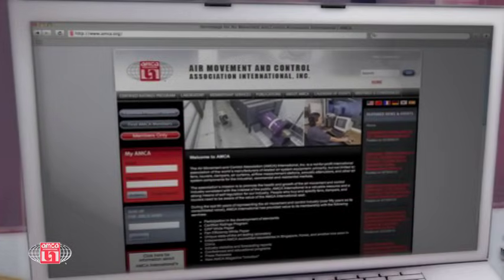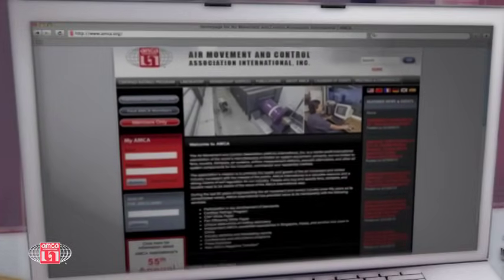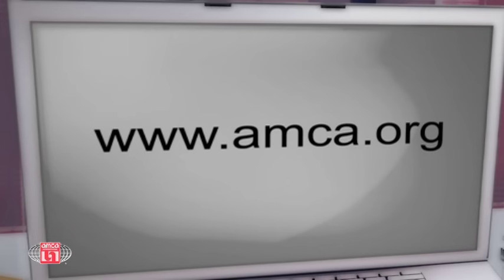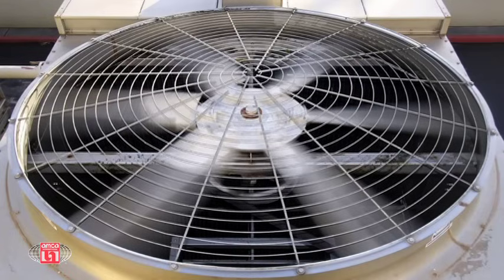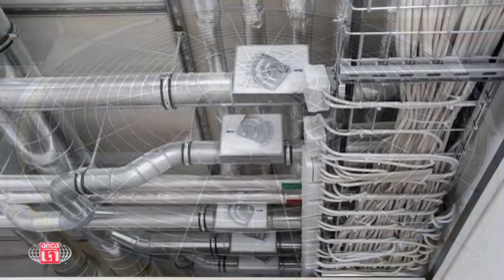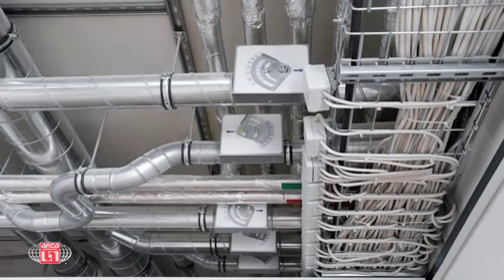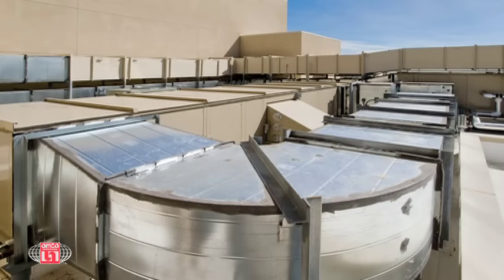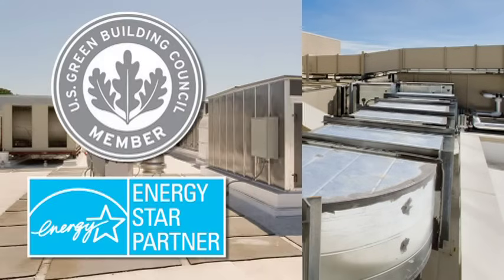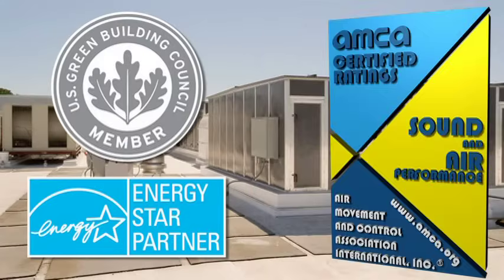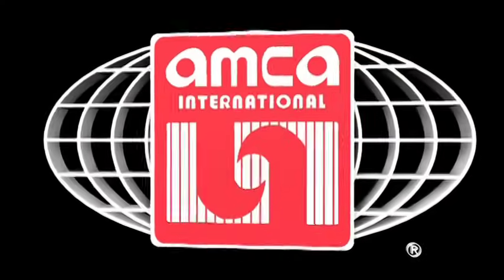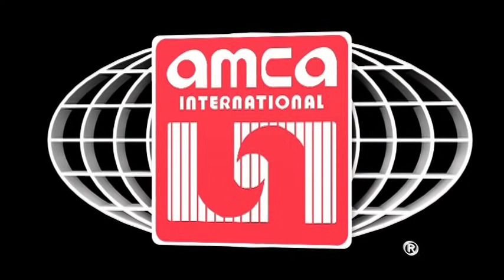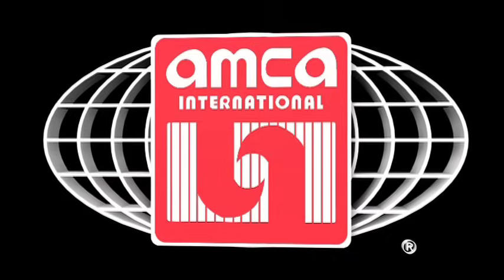You can order AMCA Publication 201 on our website at amca.org. Remember, buildings have to have ventilation. Ventilation requires fans. It's important to reduce power consumption with any system. System effects need to be avoided. AMCA assures products perform as stated. AMCA is a valuable resource for engineers, architects, contractors, and building owners. AMCA is excellence.